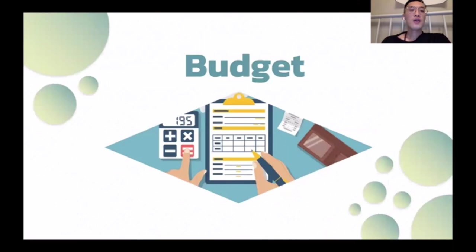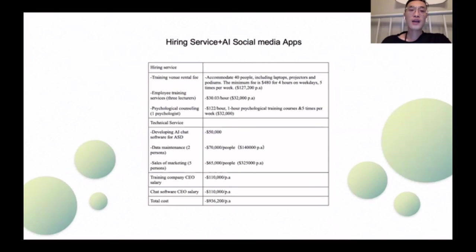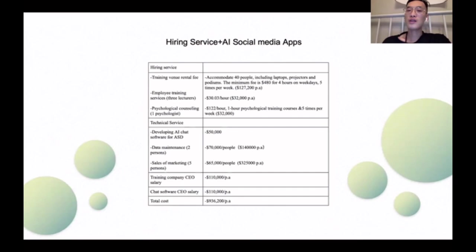Here is our budget. The budget cost according to the BOS is mainly reflected in three parts. First, ACN needs to set up an induction training institution for the ASD group, covering training venues, employee training services, and psychological training services. Second, providing AI communication software for patients with autism, covering technology development, maintenance, and promotion. Third, ACN needs to introduce outstanding management talent for sustainable development. The total budget needed to implement ACN's BOS is $936,200.